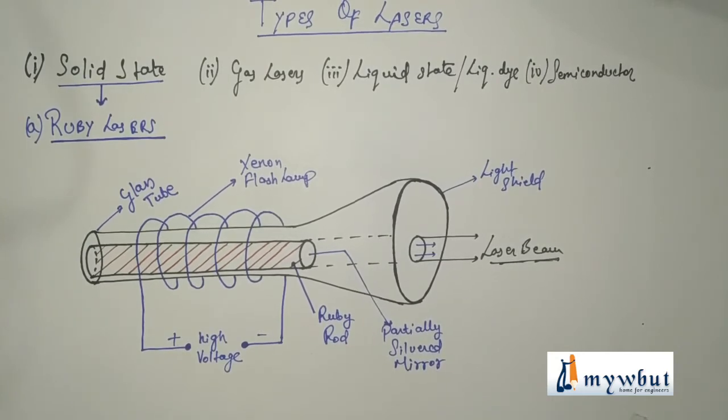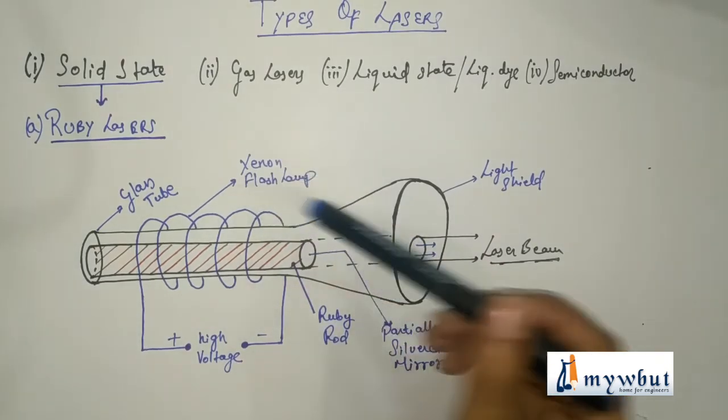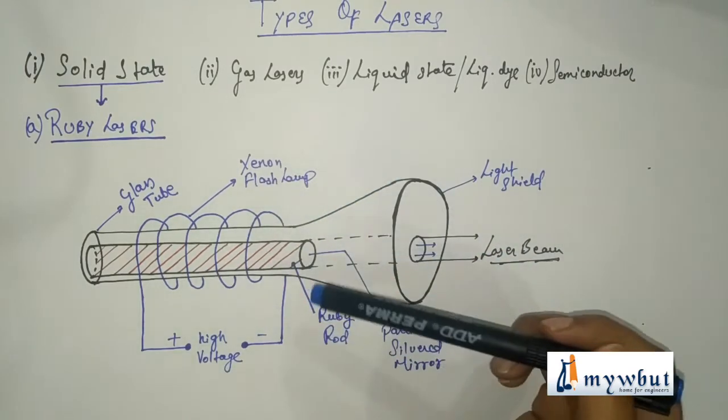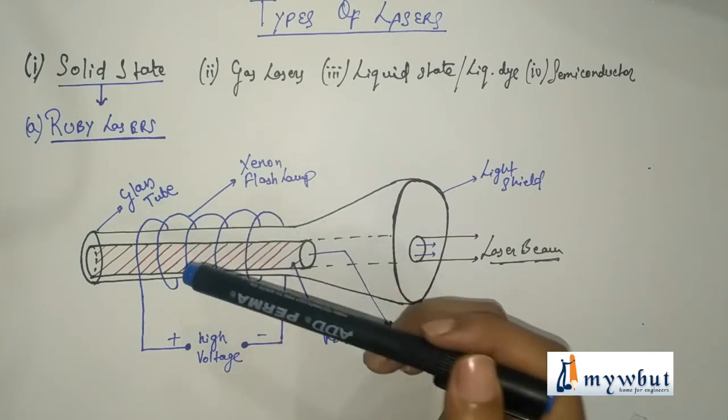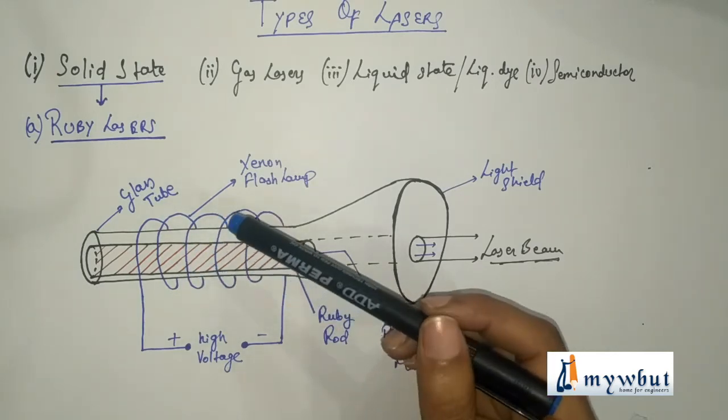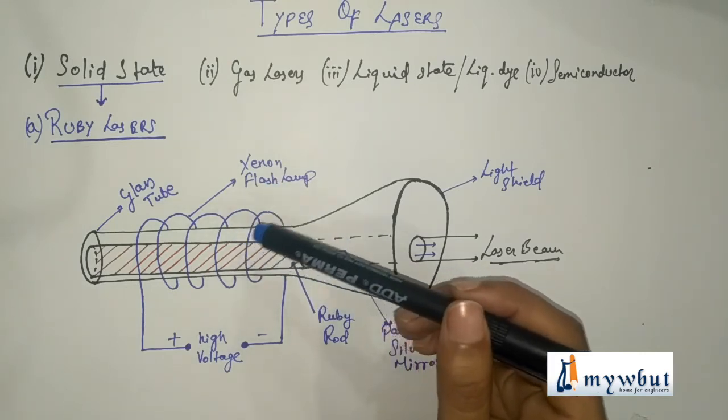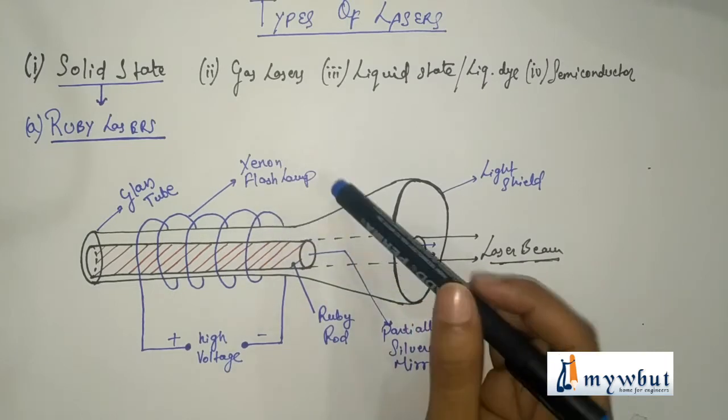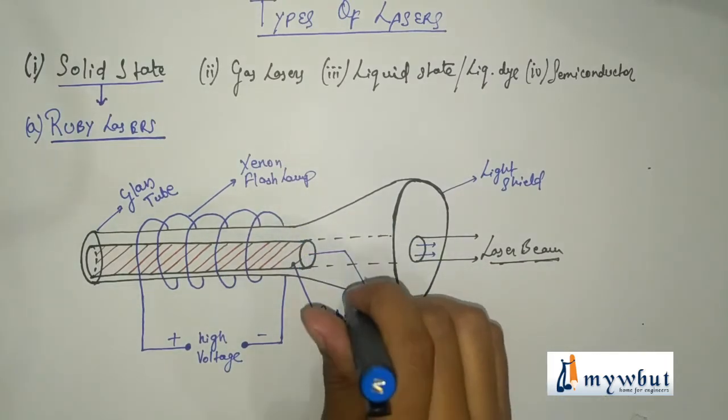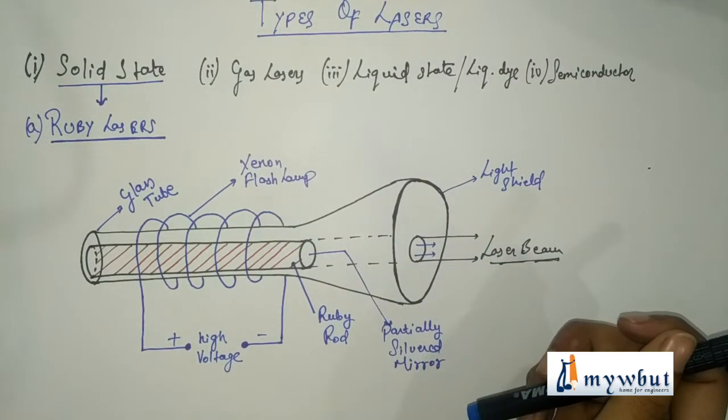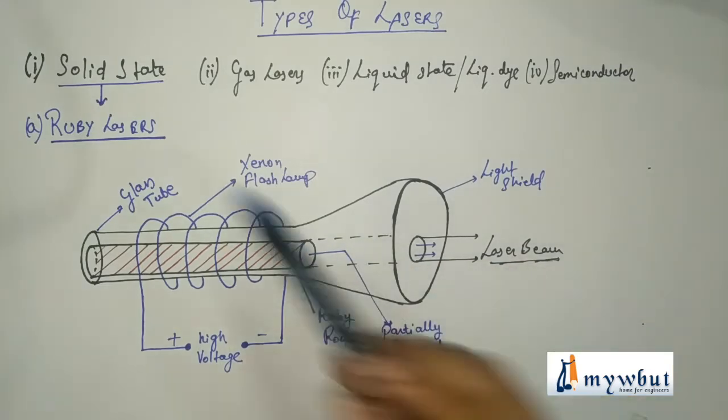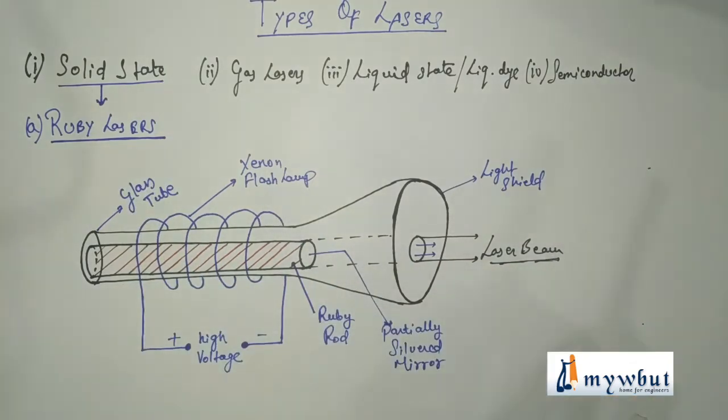You all know the basic laser formation or the basic principle behind lasing actions. So that is similar in all the cases, just the apparatus are different. So by this xenon flash lamp, light is incident on these ruby crystals. Then the stimulated transition or the population inversion takes place. So this acts as a pumping method. And hence, by the formerly discussed methods, the laser lights are emitted from these light shield surfaces. So that is how the solid state laser, that is the ruby laser, works in real life.